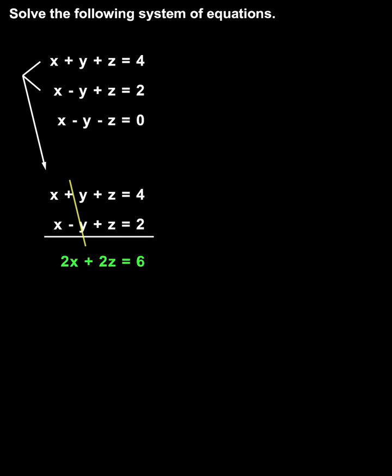Unfortunately, we still haven't solved for any of our variables. However, if we can create another equation with just x and z in it, then we'll have a system of equations in two variables, which we can use to solve for x and z. To create that equation, we need to eliminate y again.